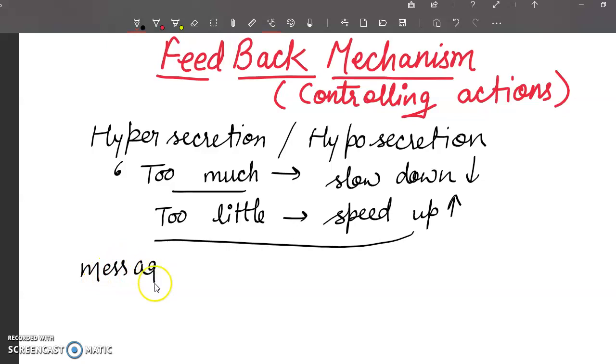These messages are conveyed from one controlling part of the body to another. Sometimes there is a fall below the normal. Suppose this is the normal value. Sometimes the level of that particular hormone goes below the normal value, and sometimes it goes above the normal value.